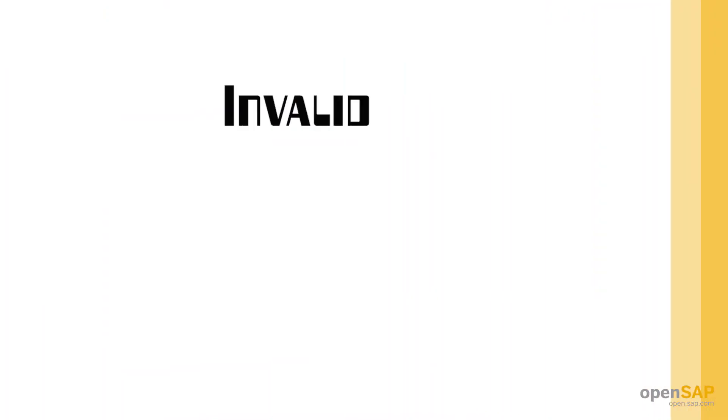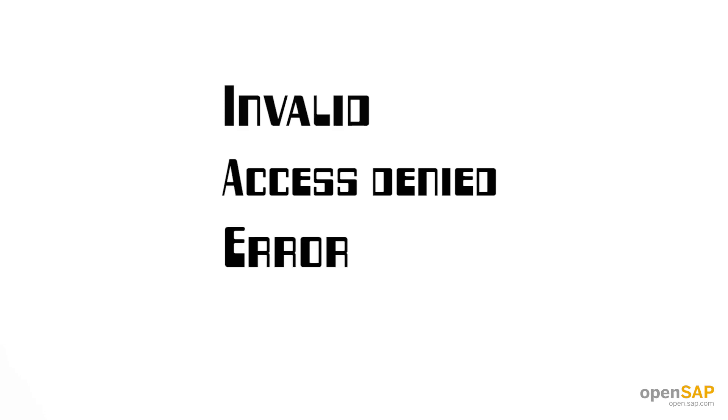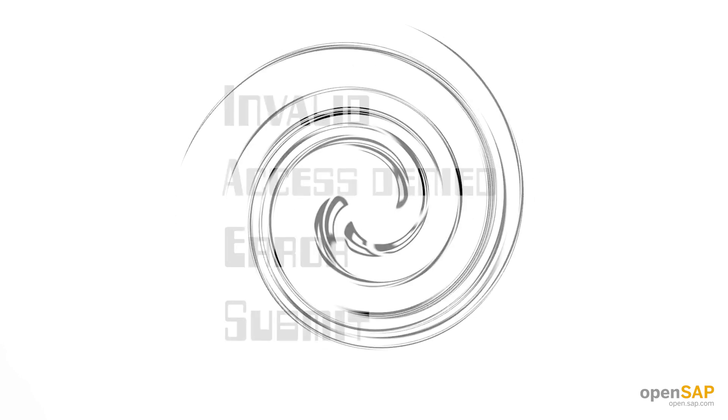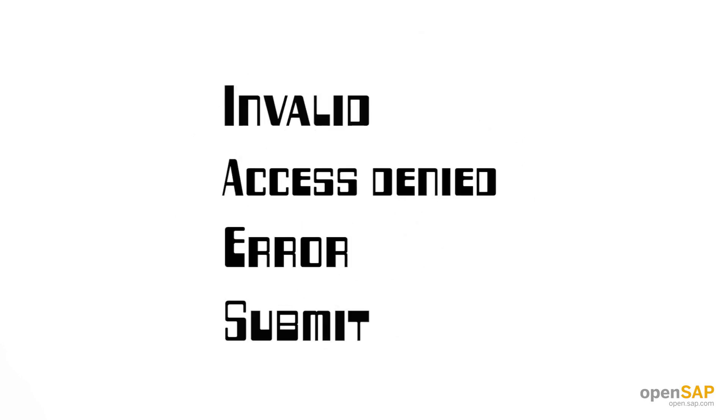So make your language human. 'Sorry, your username or password didn't work. Please try again.' Look at the text you write and scrub it for computer words — invalid, access denied, error, submit, and so on. If it sounds like something the computer from your favorite sci-fi show would say, get rid of it. Replace it with natural language.